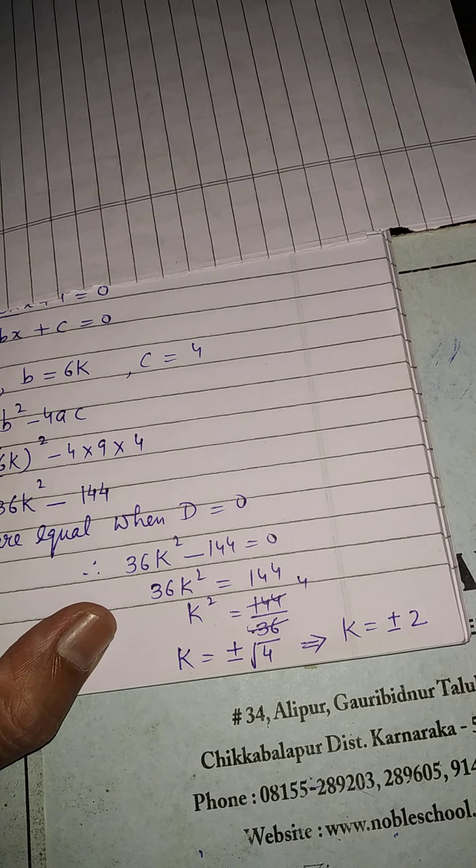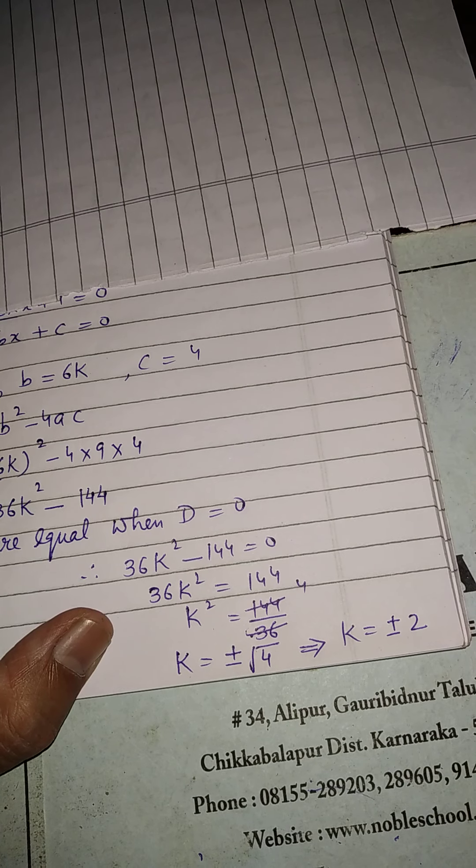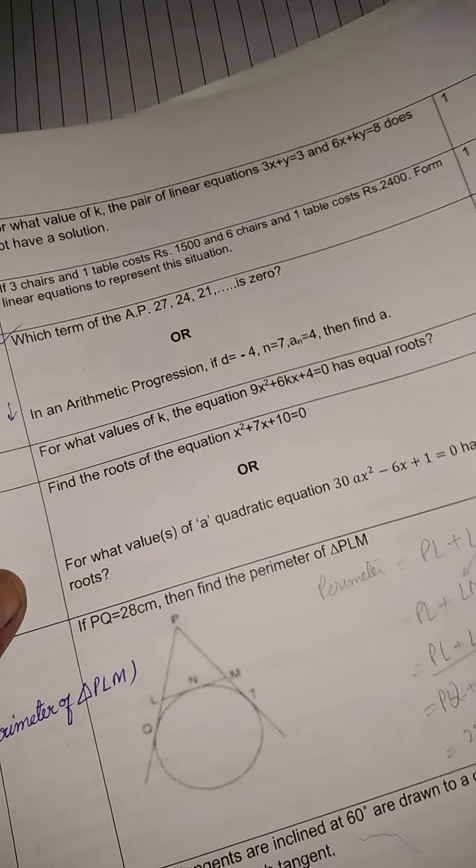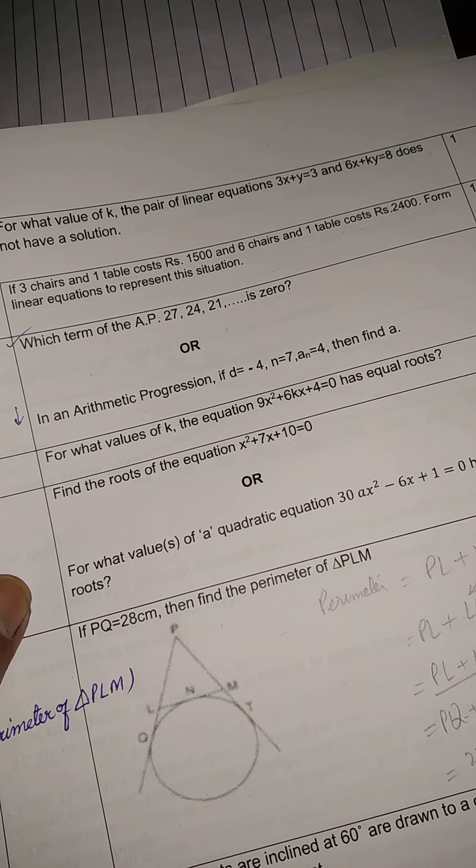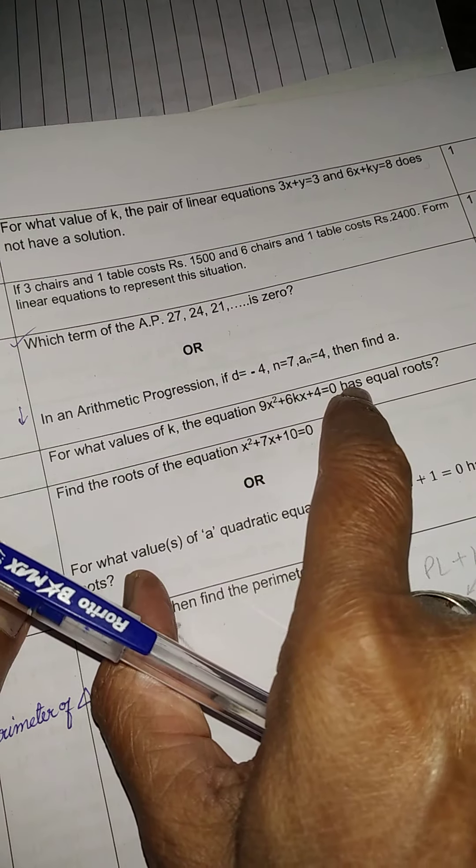That is the answer. These are the values of k. I think you understood, but see boys and girls in this type of questions with a little bit change, they can change the question. For what values of k the equation has real roots?